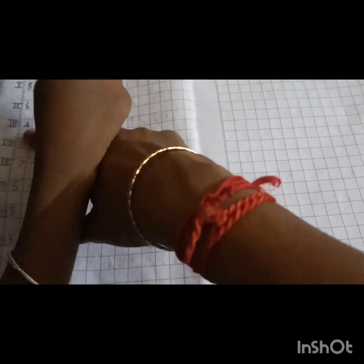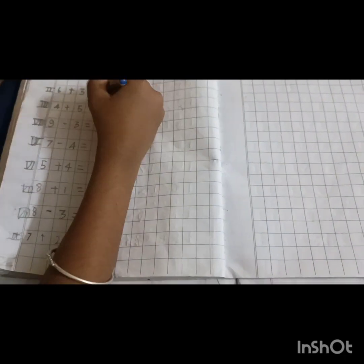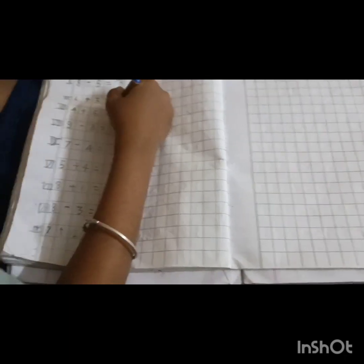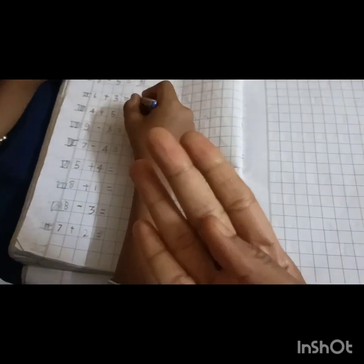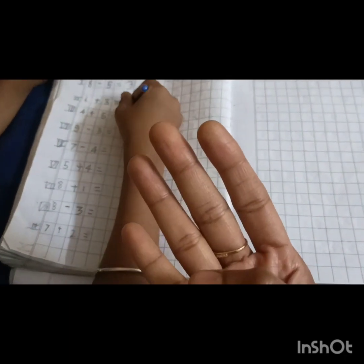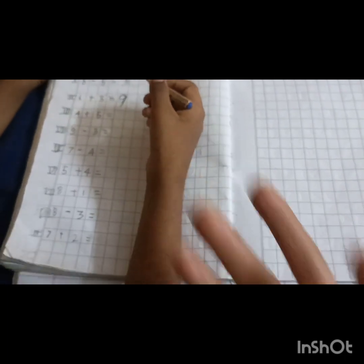Let's see. 4 plus 5. Now we put the number in mind and the number in hands. 5 in the mind, 4 in hands. 5 next to what? 6, 7, 8, 9.